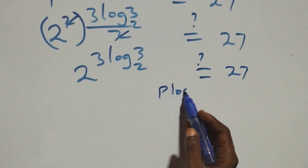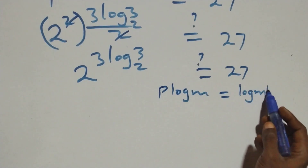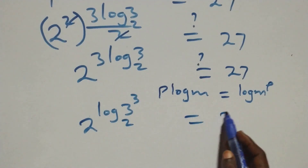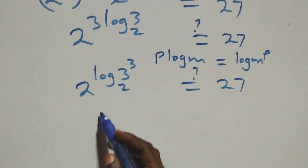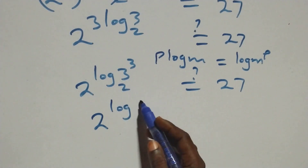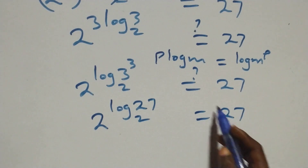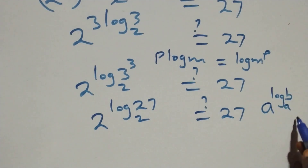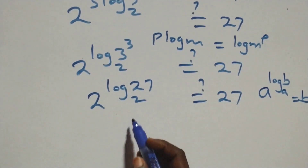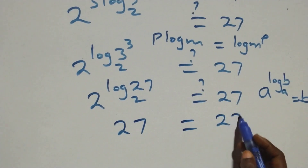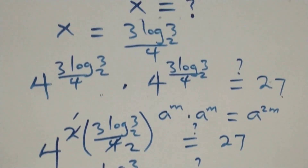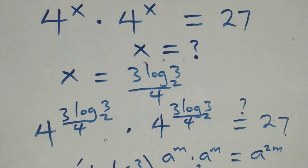This becomes two raised to the power three times log base two of three, which equals two raised to power three log base two of three. Applying the logarithm law — a raised to power log b to base a equals b — we get three raised to power three, which is twenty-seven. This equals twenty-seven, so the left-hand side equals the right-hand side. Therefore x equals three log base two of three all over four satisfies the given problem.